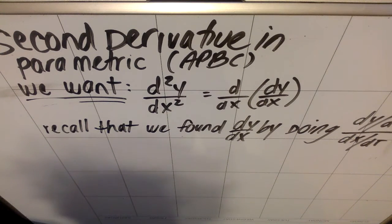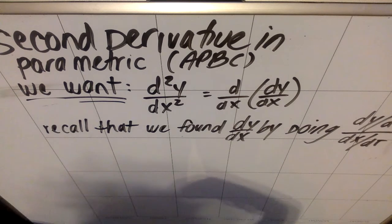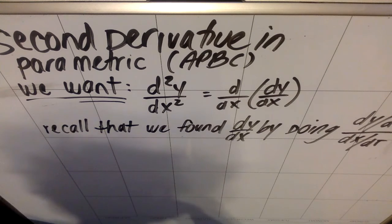So what we're going to do now is work on the second derivative in parametric form. So what we want here is d squared y dx squared, which literally means the derivative with respect to x of dy dx.